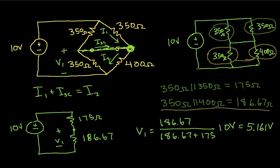Knowing this, I can now find I1. It's going to be 10 volts minus 5.168 volts over 350 ohms. And when I compute this, I get that I1 is equal to 13.83 milliamps.